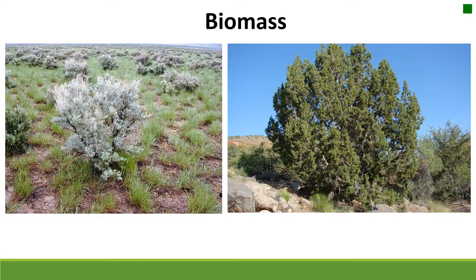We also need to know the biomass of woody species like shrubs and trees. This is important for studies on fuels, bioenergy, and carbon sequestration. We can't easily clip a ton of sagebrush, but luckily many researchers have clipped a lot and developed nice allometric equations. In the field, I measure the height and take two diameter measurements of different plants to calculate volume, then plug those into equations to estimate biomass — much easier than cutting down juniper trees.